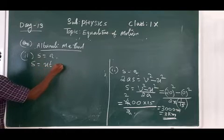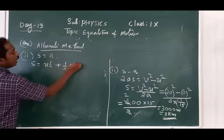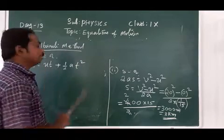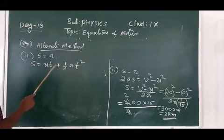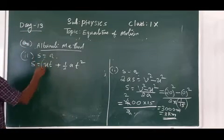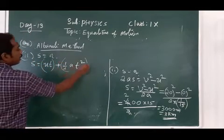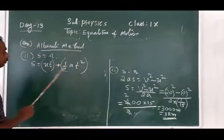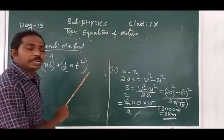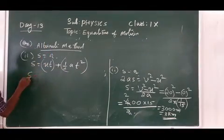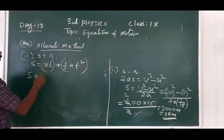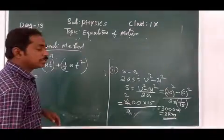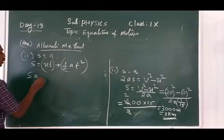Now I am teaching the alternate method as well. Using S equals ut plus half at squared. Since there are two terms — ut is one term and half at squared is another term — we substitute the values.